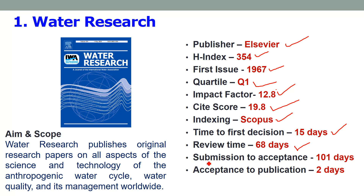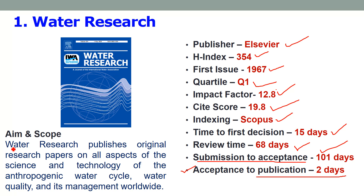The period from submission to acceptance is 101 days, meaning almost 3.5 to 4 months. After acceptance, your paper will be published online within 2 days. The impact factor of the journal is 12.8 and it is a Q1 quartile journal — one of the topmost journals in water research.